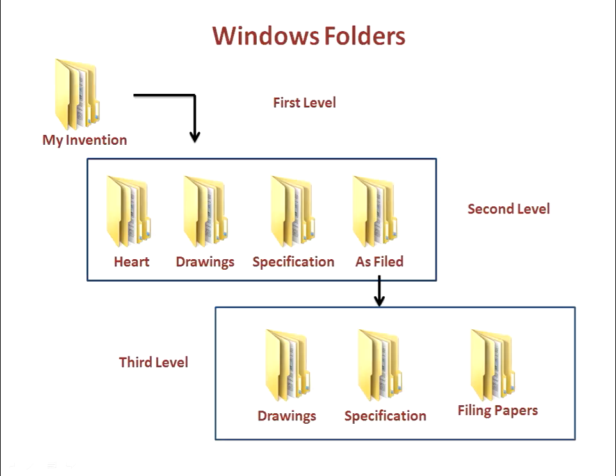Our suggestion is that you create a hierarchical folder set with the top folder named for either the title of your invention or with a number or code of your choosing. Within the top folder, at a second level, create one folder named Heart where you store the drawing or drawings and the description that you prepared in Step 2.